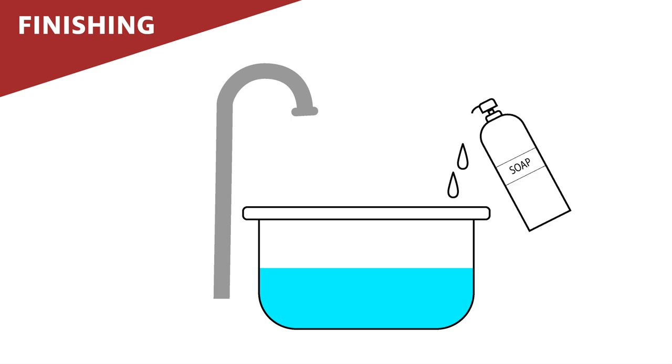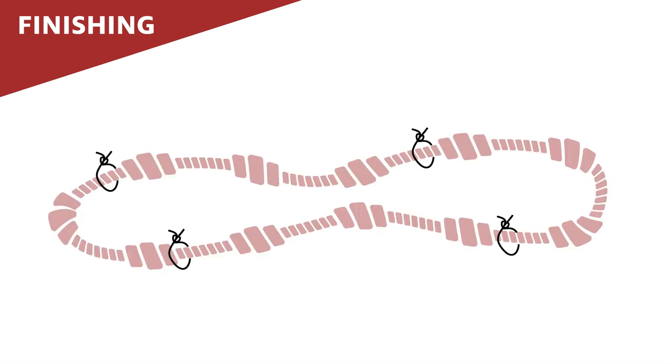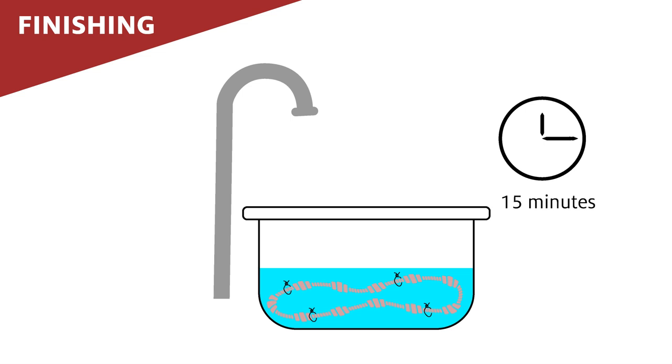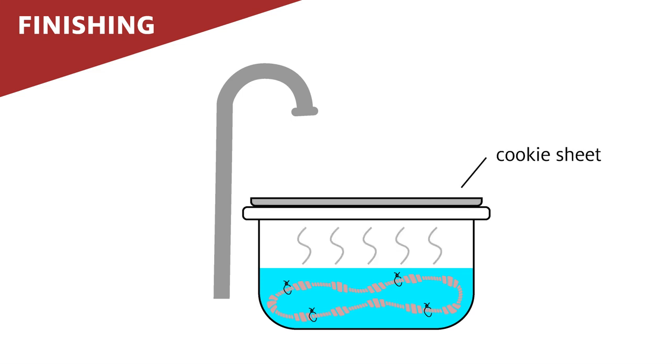I use whatever dish soap is available at the time. Right now next to my sink it happens to be Method Clementine. I put the skein of yarn after it has been tied loosely into the sink and let it sit for 15 minutes. Being here in Colorado, the water does not stay hot for long. So I put a sheet, a cookie sheet, over my sink to try to keep the heat in. I let the skein sit for about 15 minutes.